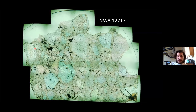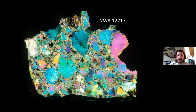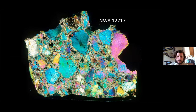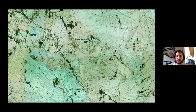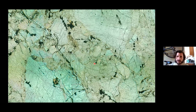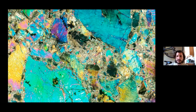Here is a thin-section image of NWA 12217 showing the texture. In plain polarized light, switching to cross-polarized light, you can see these large grains surrounded by what looks like fine-grained matrix material common in a breccia. But if you zoom in, these fine-grained areas are actually just other olivine grains. In cross-polarized light, this fine-grained-looking material is actually competent olivine grains that appear mosaicized by shock. There are planar fractures and shock mosaicism suggesting a moderate amount of shock.